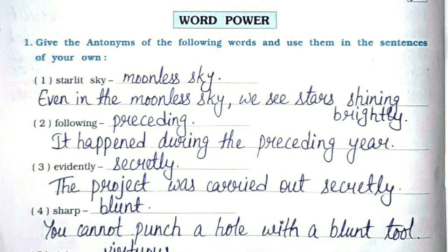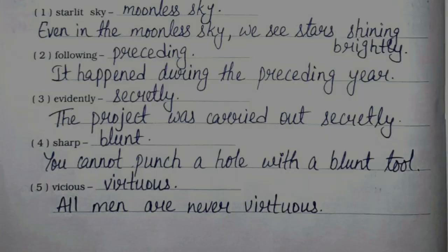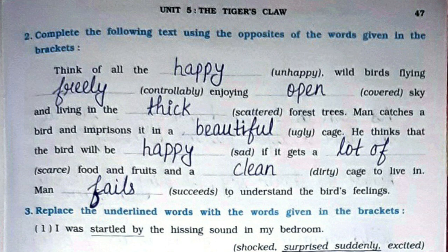Word Power, Question 1: Give the antonyms of the following words and use them in sentences of your own. Antonyms means the opposites of the words. 1. Starlit sky — moonless sky: 'Even in the moonless sky we see stars shining brightly.' 2. Following — preceding: 'It happened during the preceding year.' 3. Evidently — secretly: 'The project was carried out secretly.' 4. Sharp — blunt: 'You cannot punch a hole with a blunt tool.' 5. Vicious — virtuous: 'All men are never virtuous.'